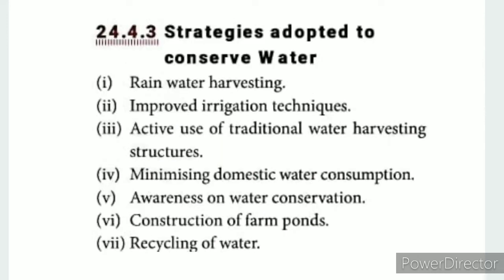The strategies adopted to conserve water include rainwater harvesting in buildings, which increases groundwater levels. Improving irrigation techniques and the active use of traditional water harvesting structures are also effective conservation strategies.